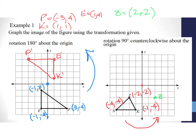For N at (-4, -4), switching numerals gives (4, 4), but in the fourth quadrant it becomes (4, -4), giving us N prime. For K at (-1, -4), switching gives (4, 1), and applying fourth-quadrant signs gives K prime at (4, -1). Connecting these points produces the rotated triangle.